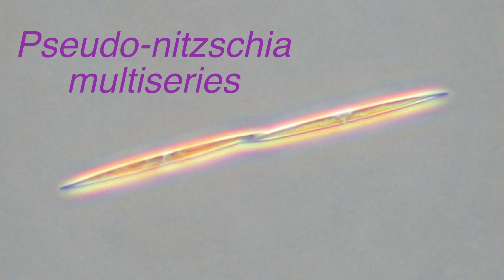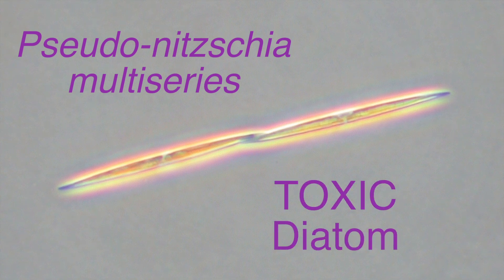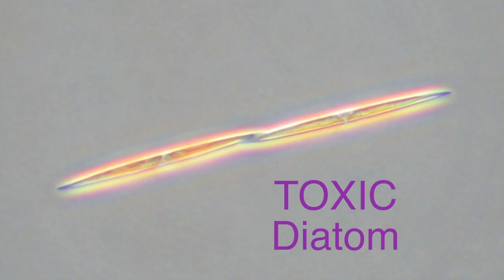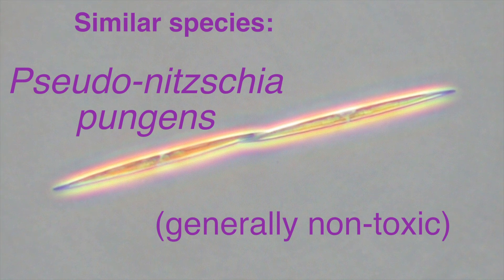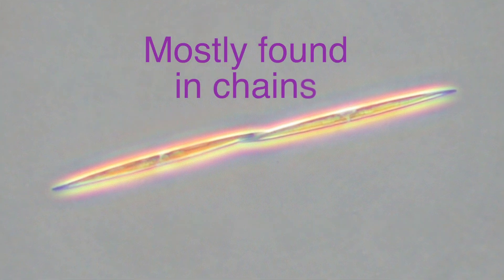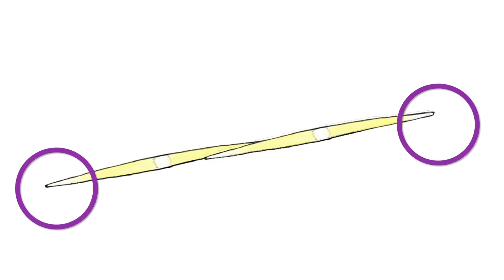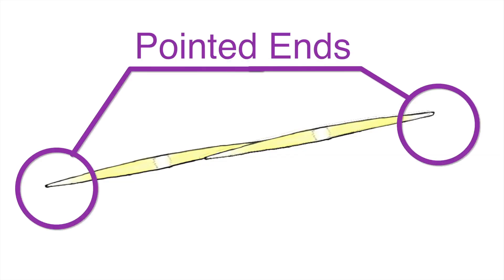Pseudo-nitzschia multiseries, also a large-type Pseudo-nitzschia species, is toxic and indistinguishable under the light microscope from Pseudo-nitzschia pungens, which is generally non-toxic. This group is also normally found in chains, and the cell ends appear more pointed than the previous group.